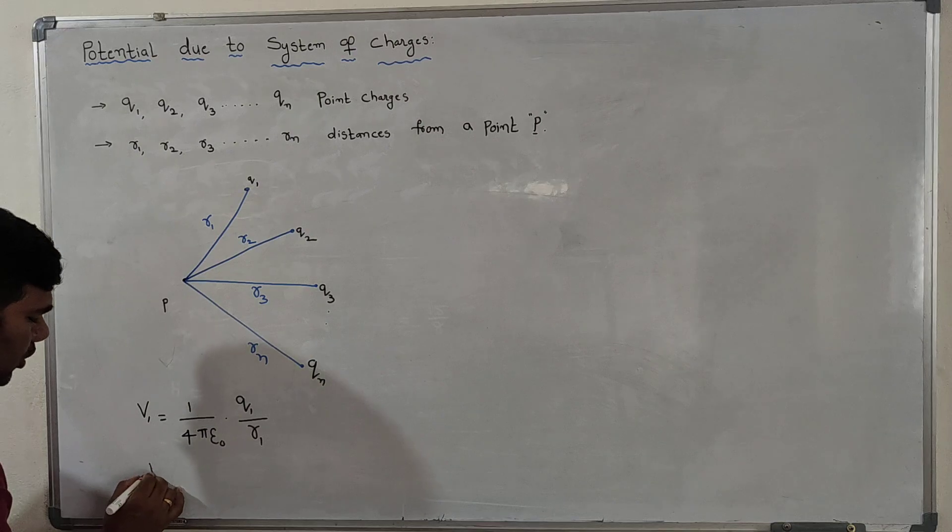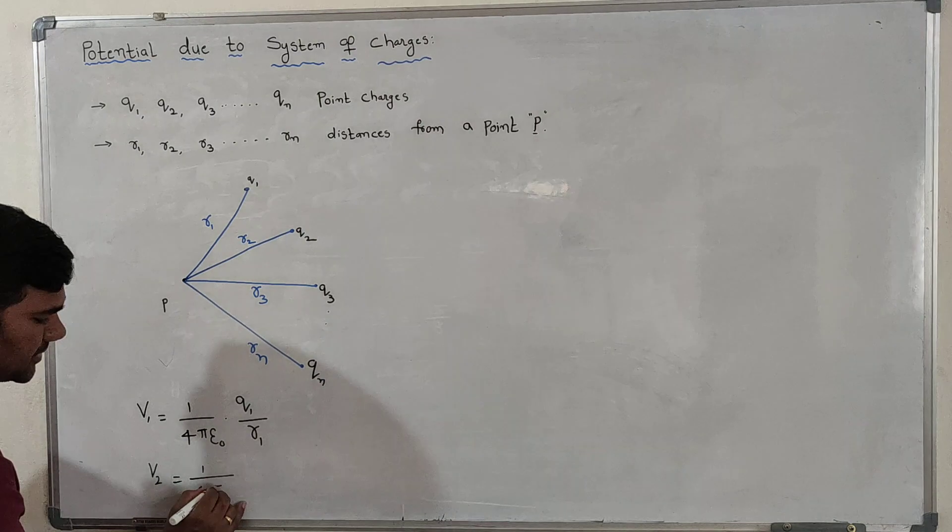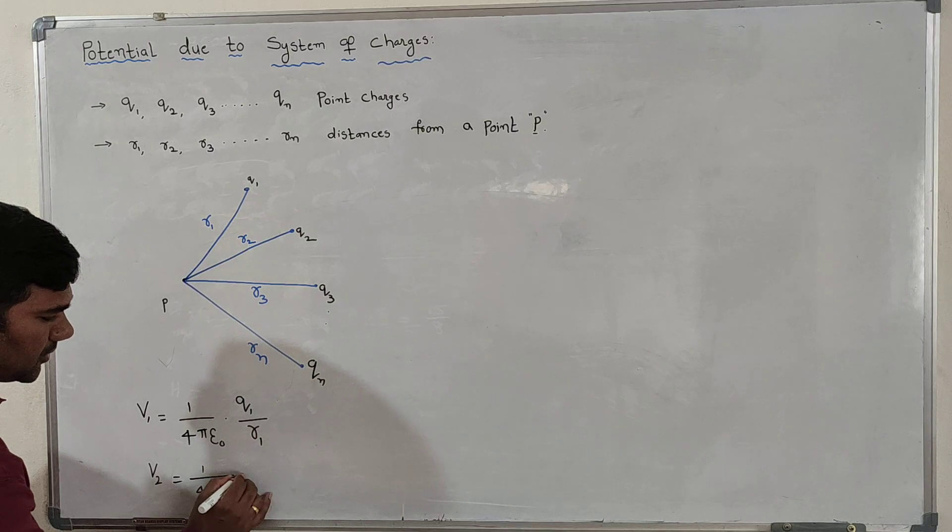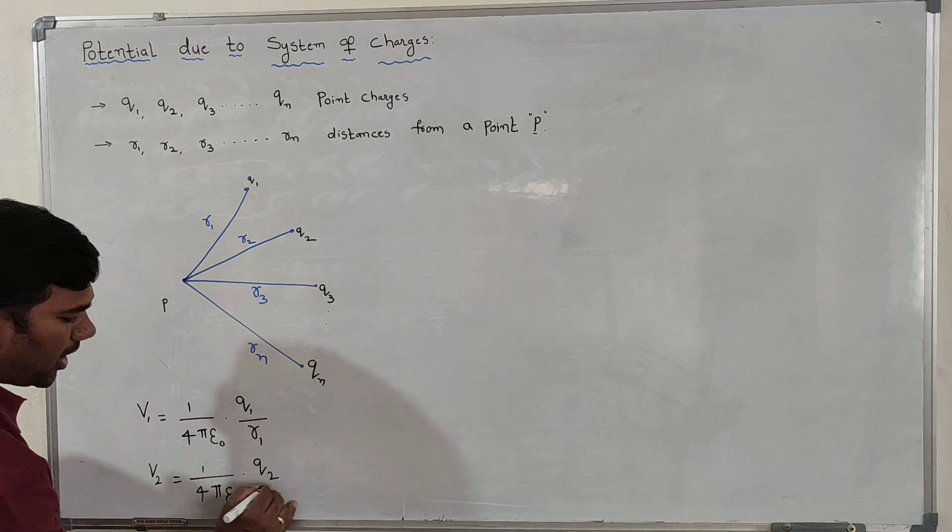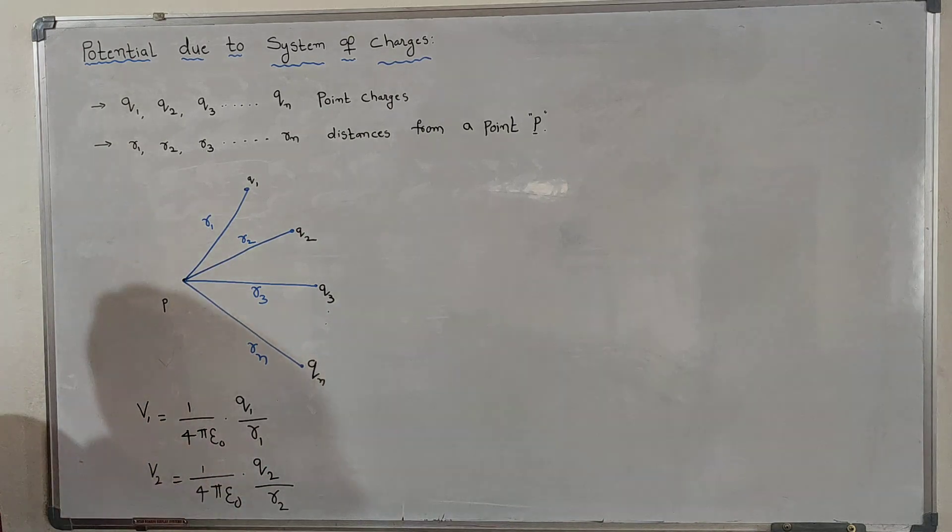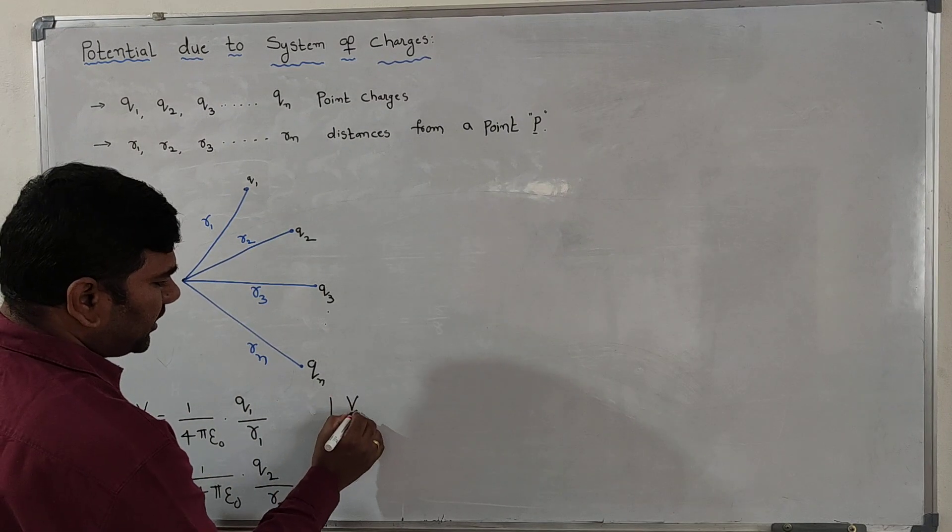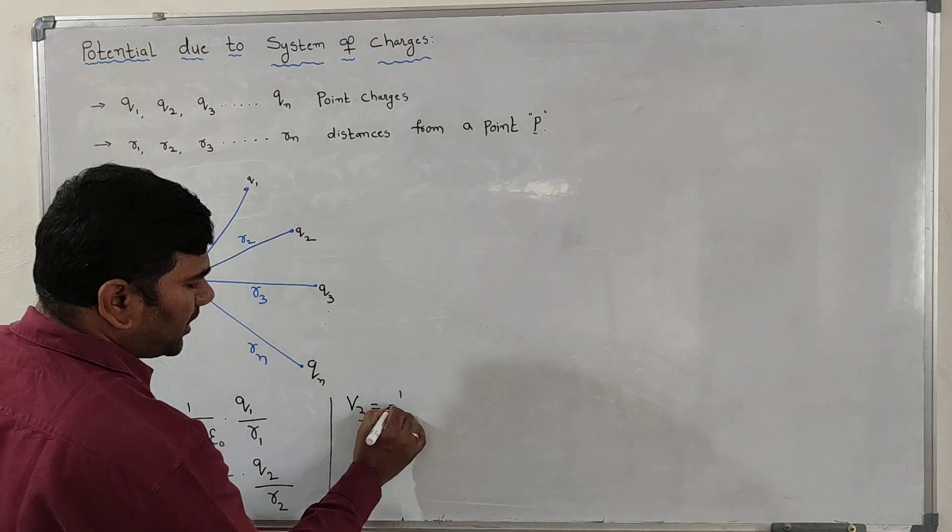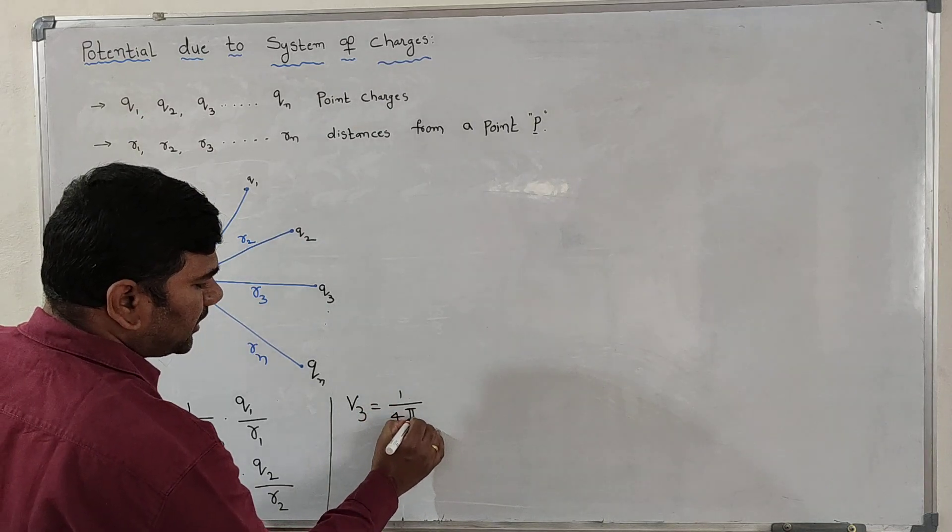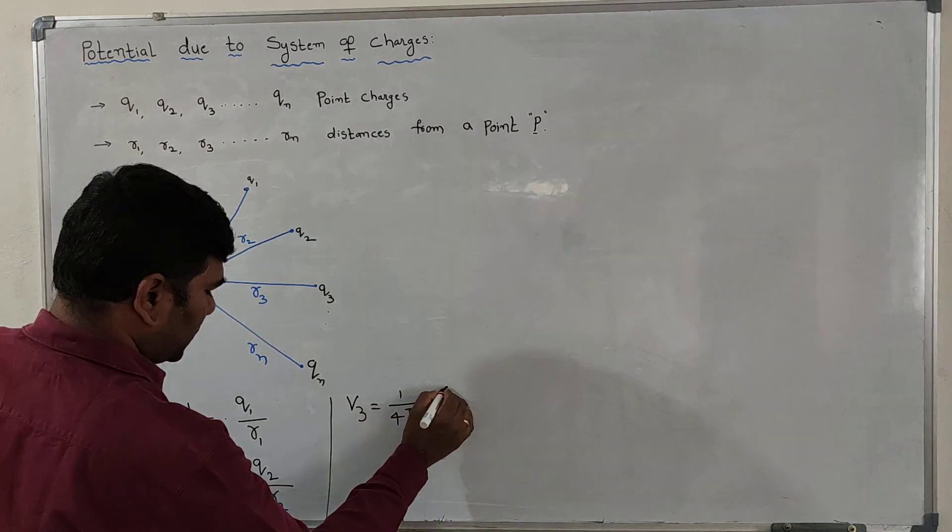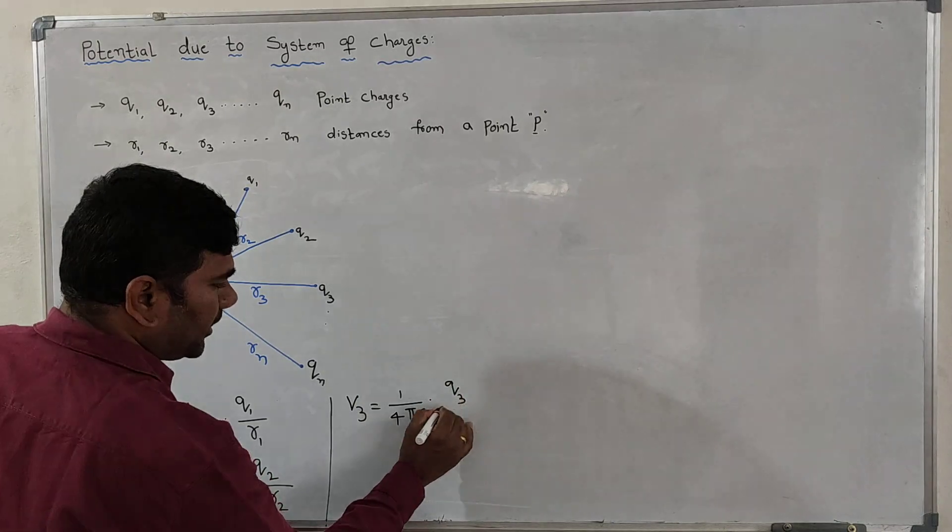Similarly, potential due to charge 2: 1 by 4πε₀, Q2 by R2, R2 is the distance. Likewise, V3 is equal to 1 by 4πε₀, Q3 by R3.